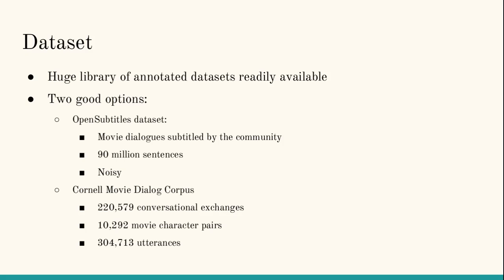It consists of movie dialogues that have been subtitled by the community. It's a huge corpus consisting of 90 million sentences, and being this big, it's a much noisier corpus as well. So I decided to go for the Cornell Movie Dialogue Corpus because, in addition to not having enough computing power, this dialogue corpus didn't have as much noise as the previous dialogue corpus. This has almost 2,200 conversational exchanges.